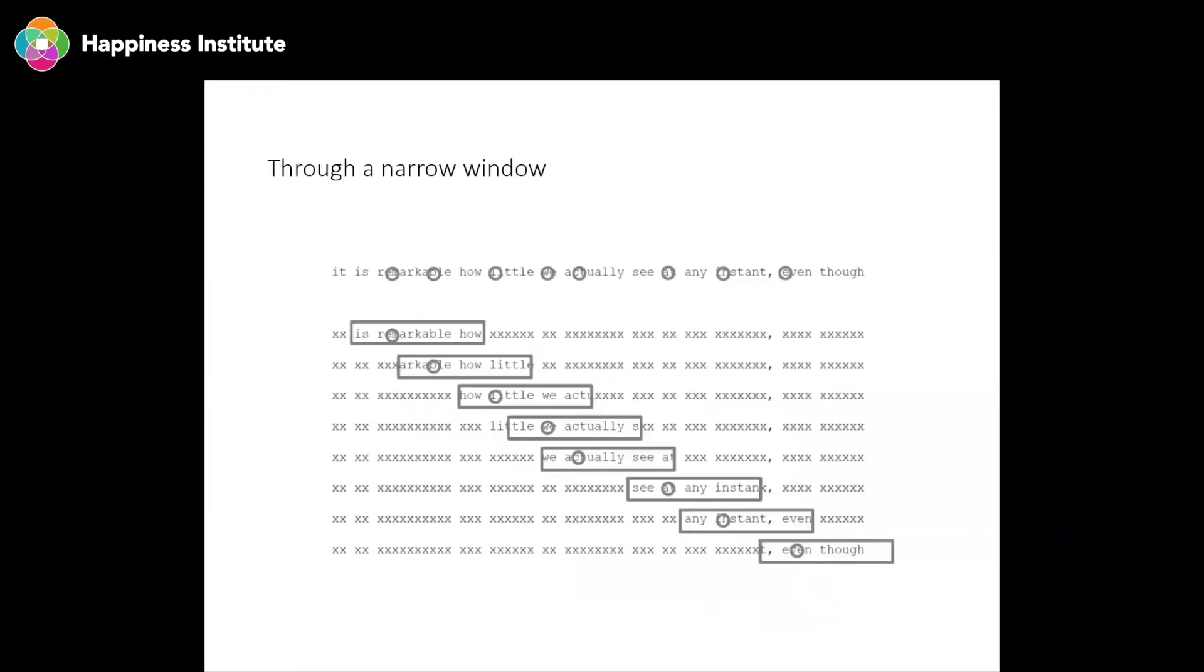And that is a very, very profound limitation. Let me give you another example. So reading. So if you give somebody a sentence such as, it's remarkable how little we actually see at any instant, this comes from research from Keith Rayner's lab, who pioneered eye tracking research in the 1970s on reading. Now in this type of study, what you do is you look at where people's eyes are looking by putting an eye tracking system. So you know where they're looking as they read across the screen.